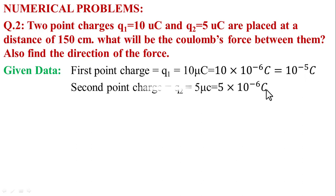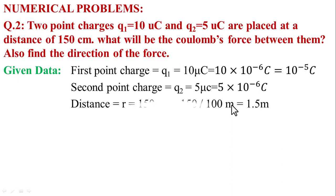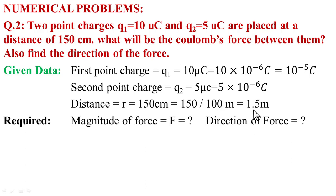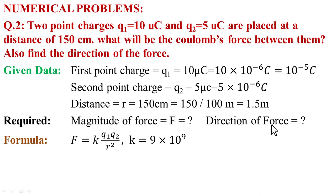Second point charge Q2 = 5 × 10⁻⁶ C. Distance between them R = 150 cm = 150/100 m = 1.5 m. We need to find the magnitude of force F and the direction of force. We will use the formula from Coulomb's law.